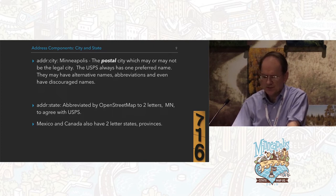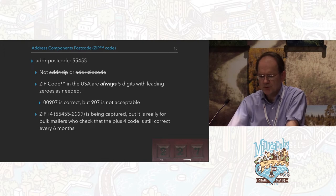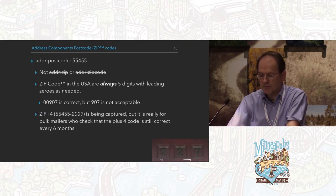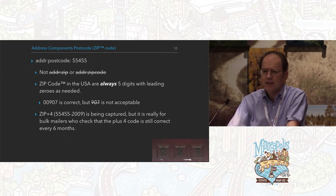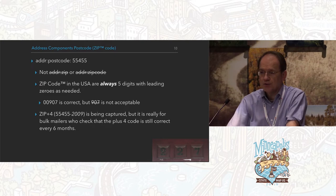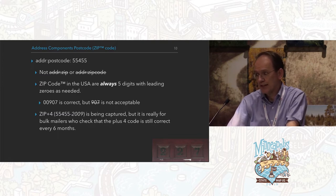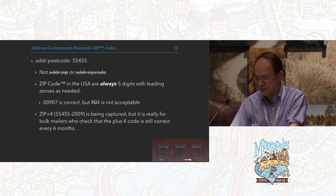addr:state or addr:province in Canada is abbreviated to two letters. Mexico and Canada also have two-letter state and province abbreviations. The zip code, or postcode as we say, is not keyed as addr:zip or zip_code — it is addr:postcode. A zip code is always five digits, so if needed it is zero-padded; 00907 is correct. Some people have been capturing zip-plus-fours, but I don't see the need since those are used in the mailing industry and need to be rechecked every six months.